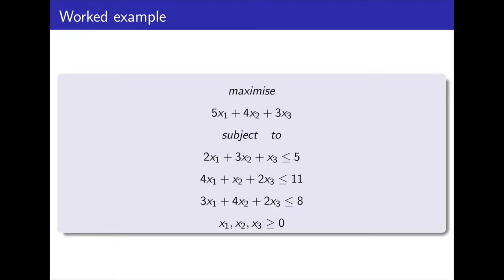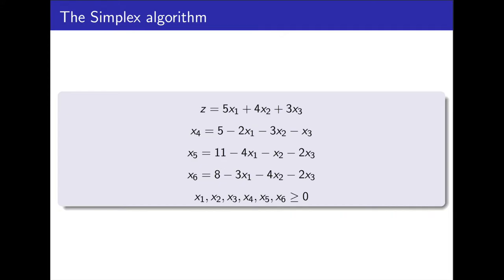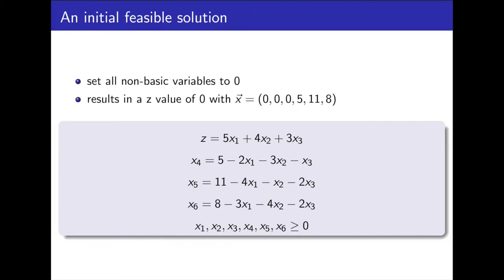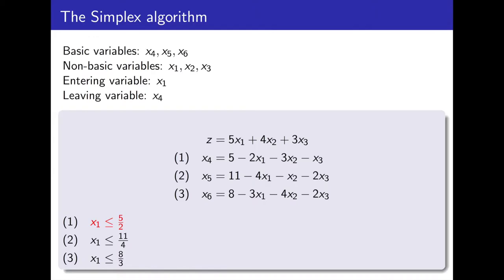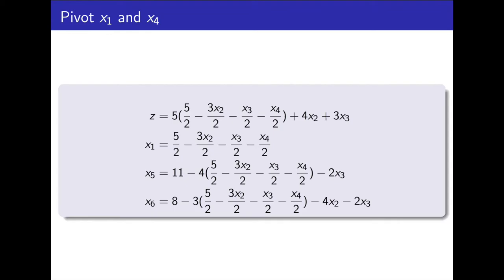We shall now go through a worked example from the linear program shown. Converting this into slack form, we have the following. Our non-basic variables are x1, x2, and x3. Our basic variables are x4, x5, and x6, all subject to non-negativity constraints. In each iteration, we obtain a basic feasible solution by setting all non-basic variables to zero. At this point, our objective value is zero. We now choose our entering variable — a variable in the objective function with positive coefficient. Choosing x1, we increase its value until a constraint becomes tight. We then pivot x1 with the basic variable of the tightest constraint. The entering variable is x1 and the leaving variable is x4 of equation 1.